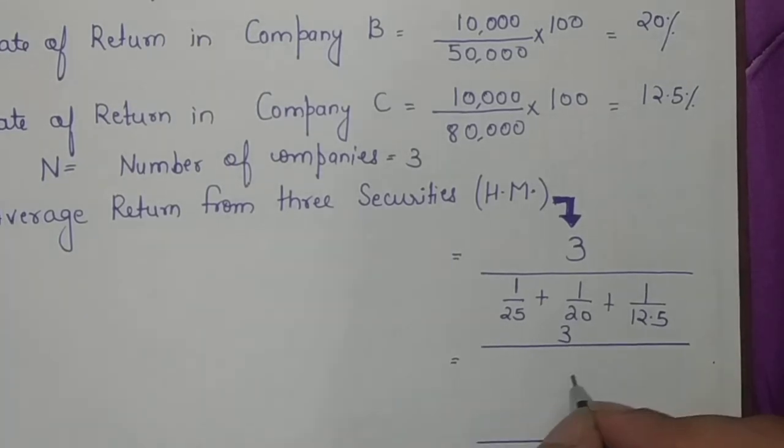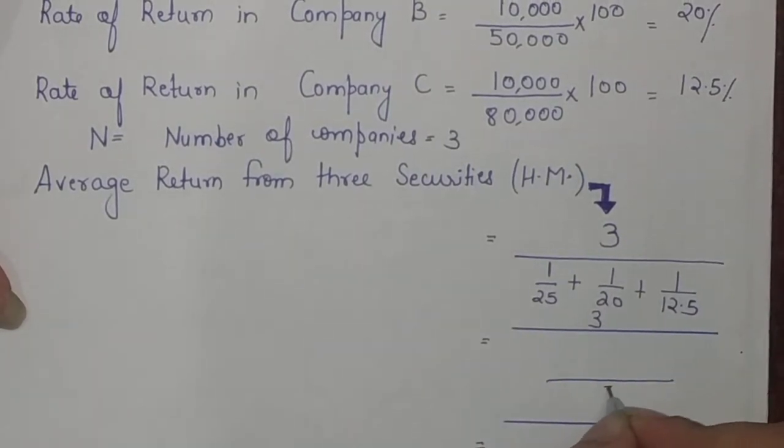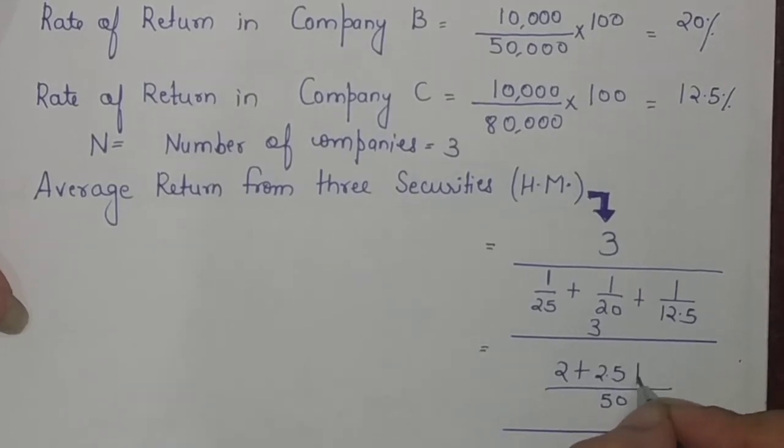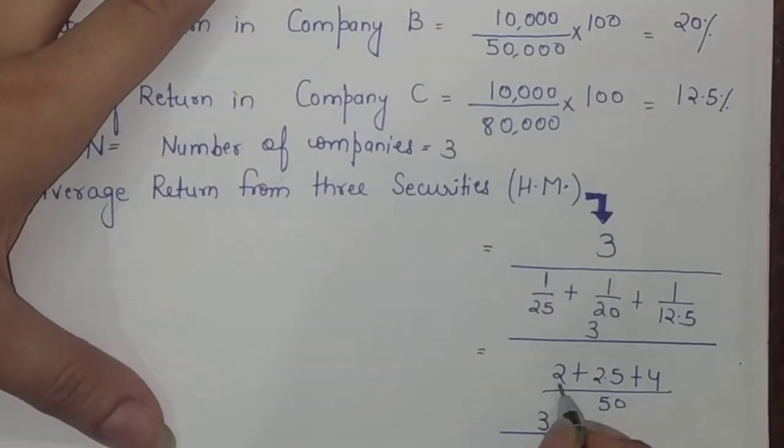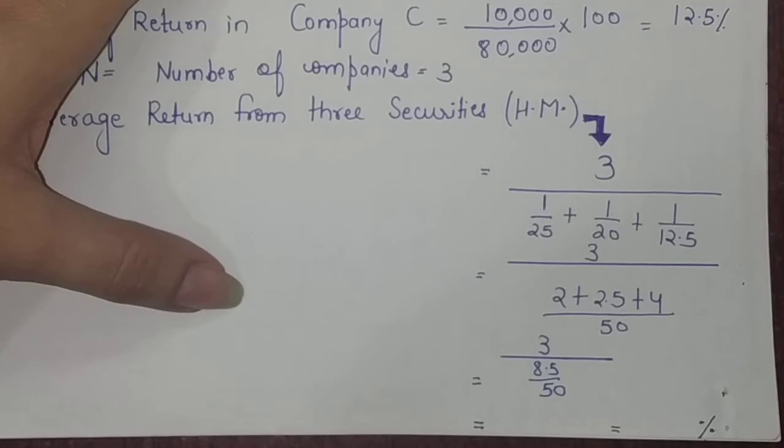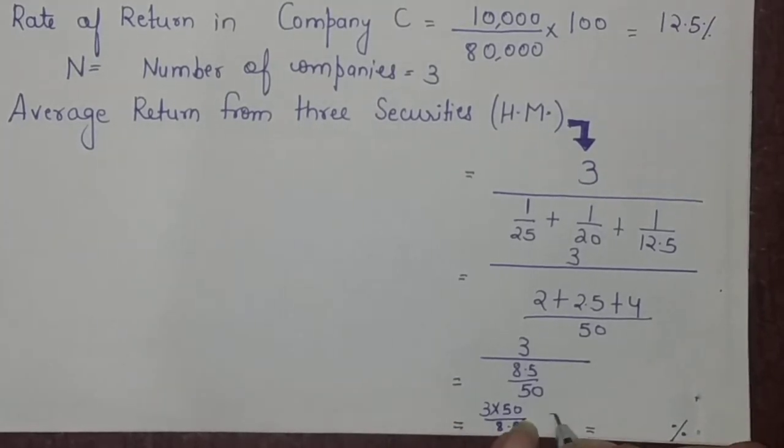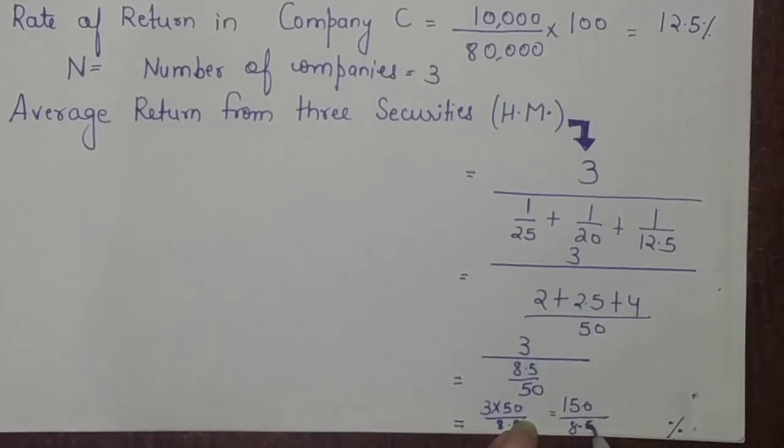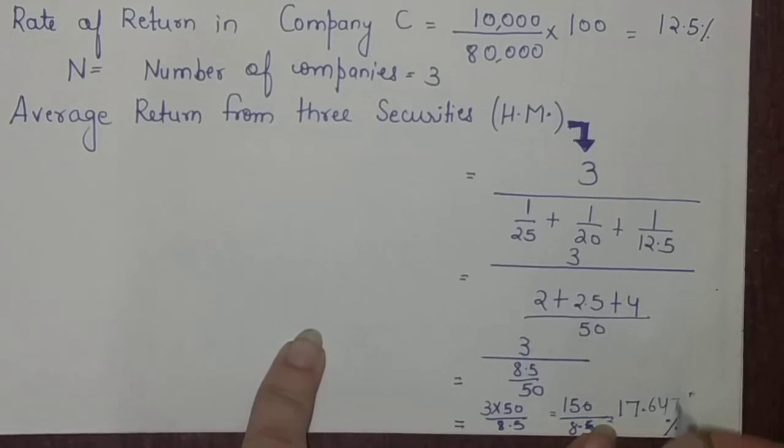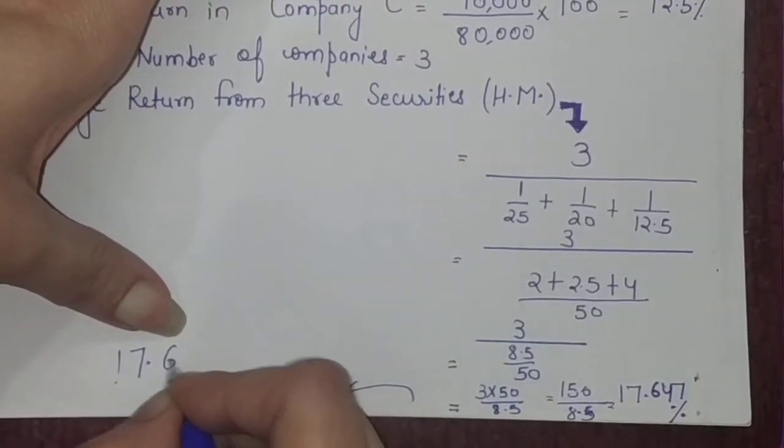It will become 3 upon - in the denominator you will take the LCM of 25, 20, and 12.5, which is 50. You will get 25 twos are 50, 20 two point fives are 50, and 12.5 fours are 50. So the denominator becomes the total of 2 plus 2.5 is 4.5 plus 4 is 8.5 divided by 50. It will further become 3 into 50 divided by 8.5, which becomes 150 divided by 8.5, which is 17.647 percent, or approximately 17.65 percent.